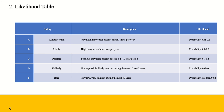Likelihood is rated in terms of annual occurrence on a five-point descriptive scale, showing the likelihood of a specific risk arising and leading to the assessed level of consequences. As you can see here, we have five distinguished levels of likelihood, from 'almost certain' to 'rare,' along with corresponding probabilities and descriptions.